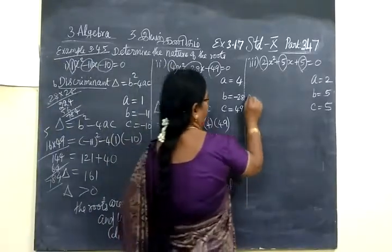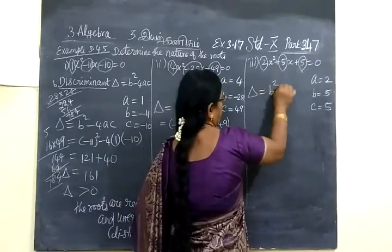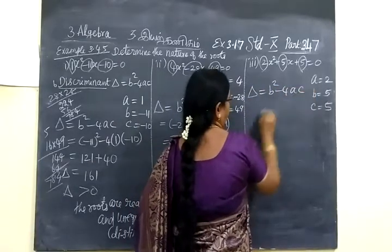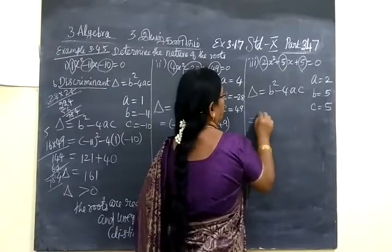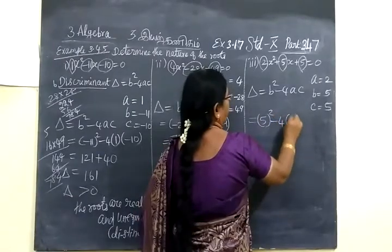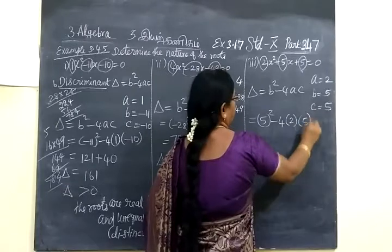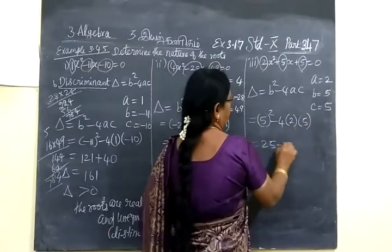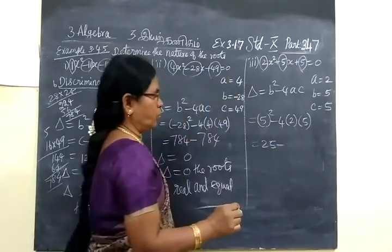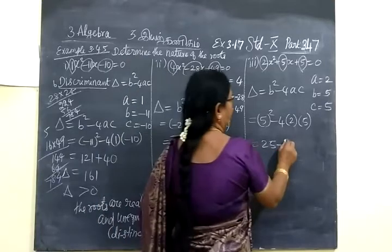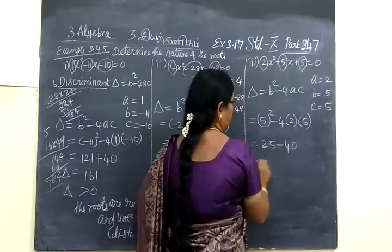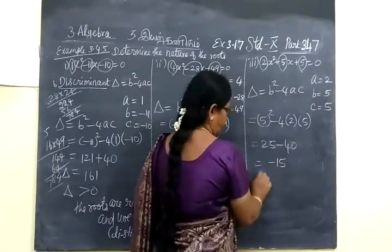Now comes the third one. Delta equal to b squared minus 4ac. B is 5, so 5 squared minus 4 bracket A into C. So 25 minus 4 twos are 8, 8 fives are 40. This equals minus 15.